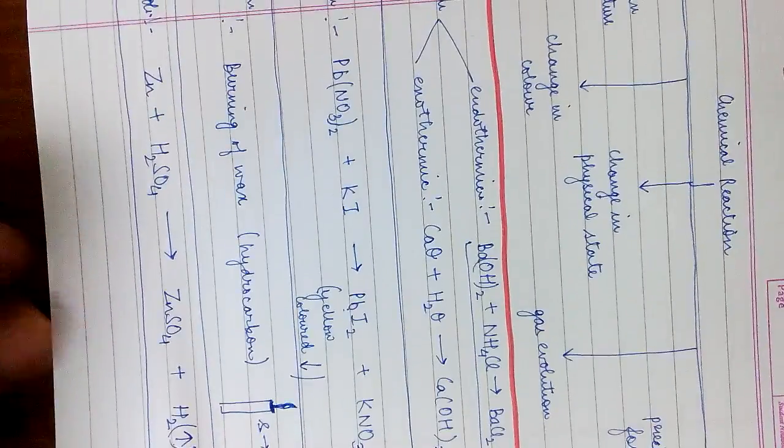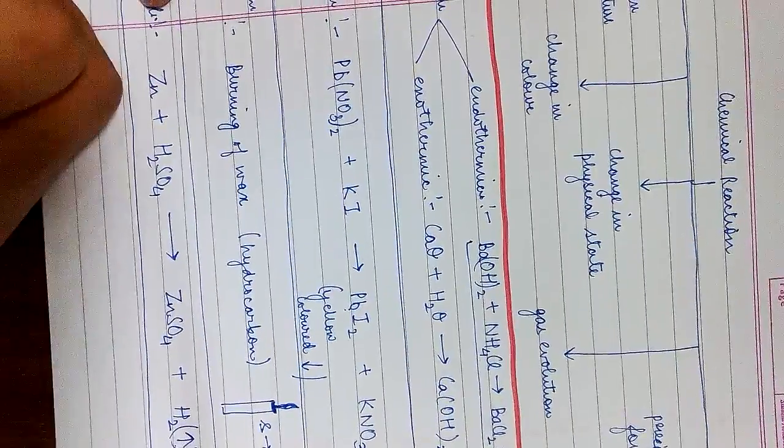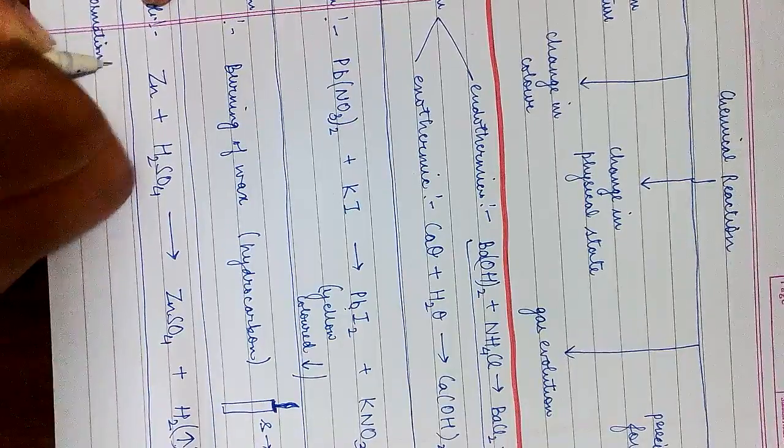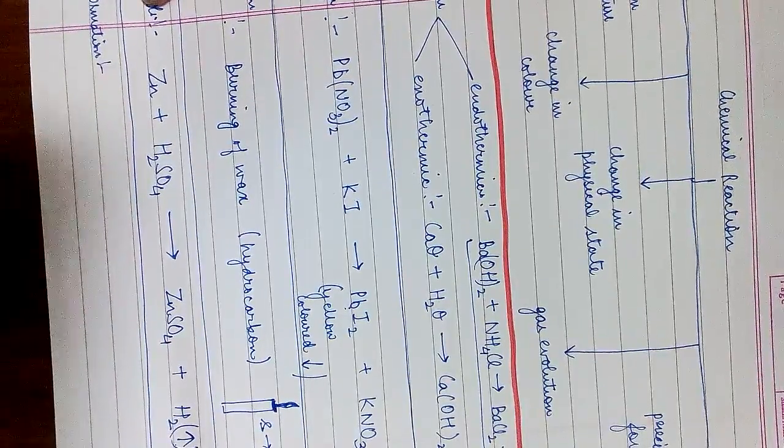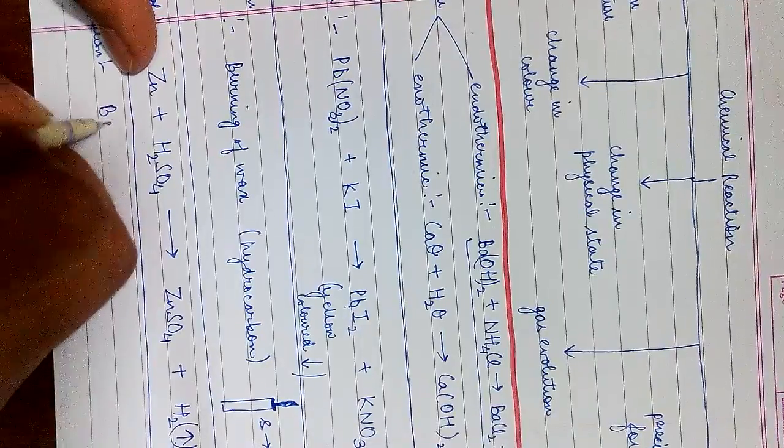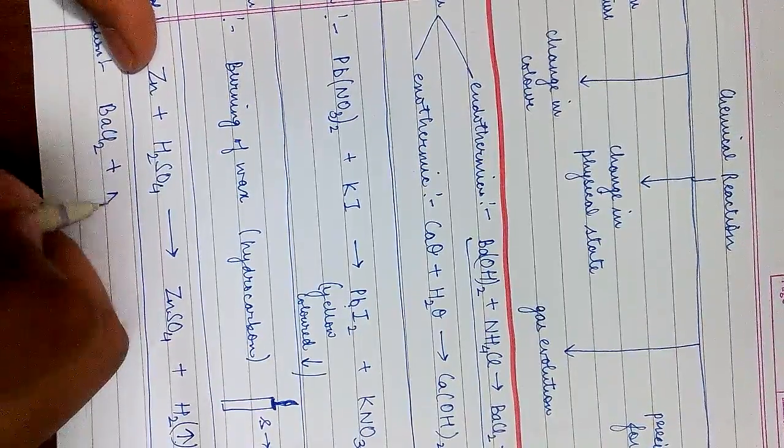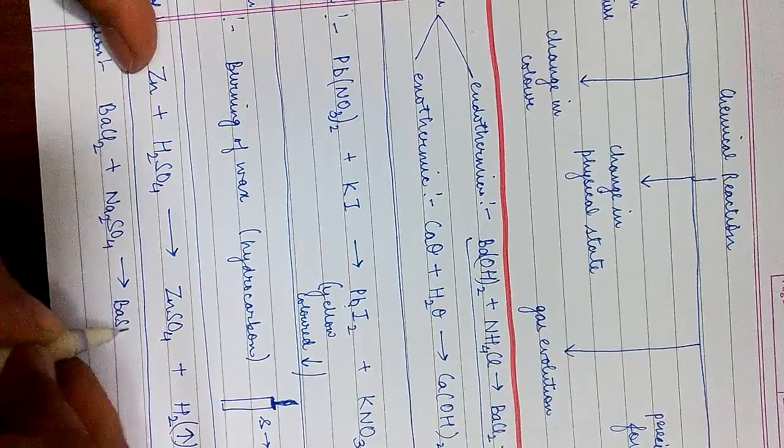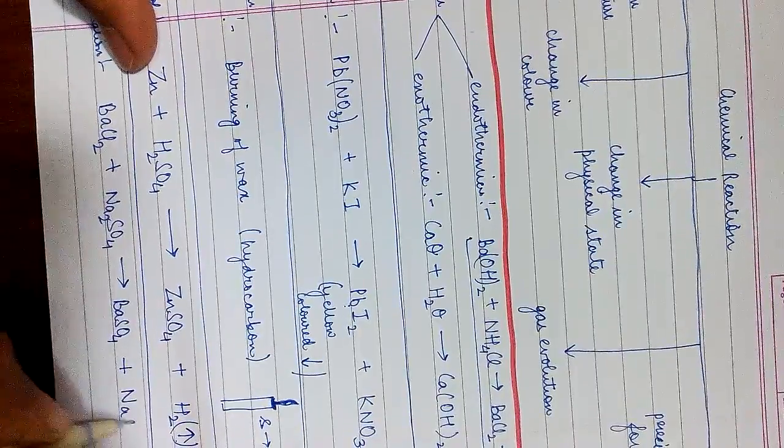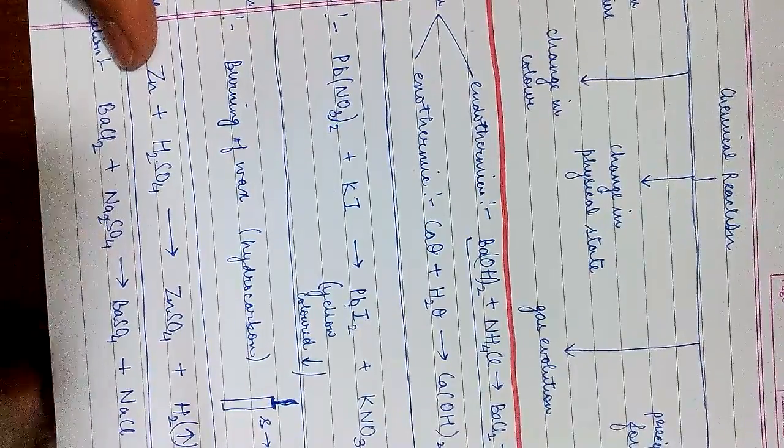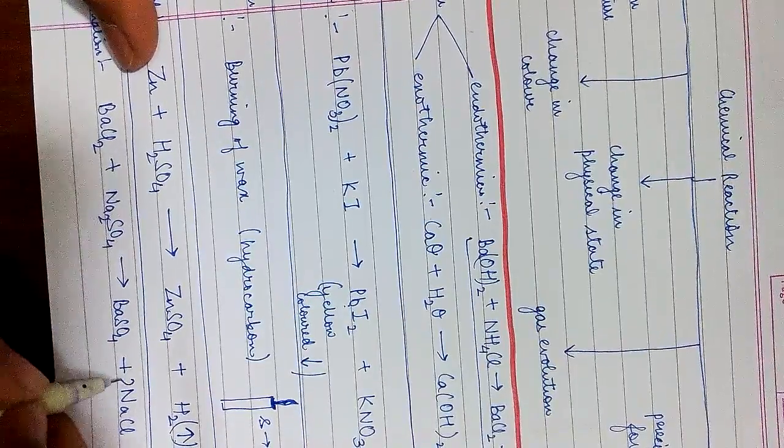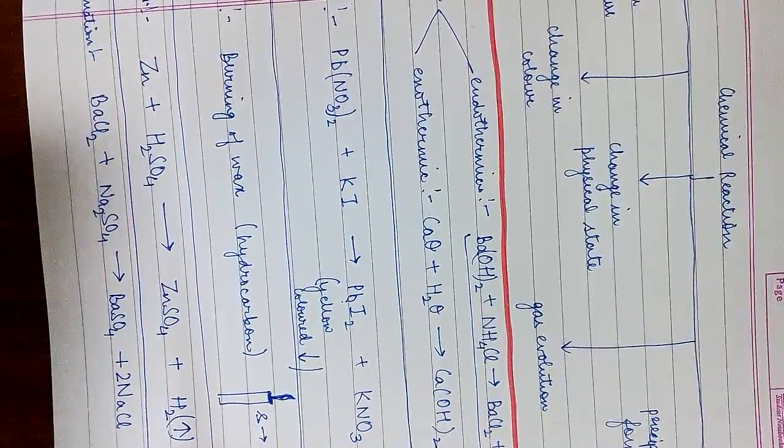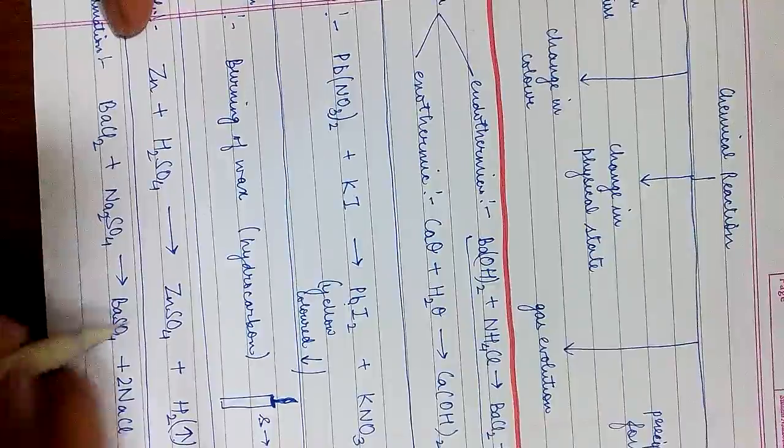Now precipitate formation, the easiest one. For this we have the best example and the most common one, that is the reaction of barium chloride with sodium sulfate to form the precipitate of barium sulfate and sodium chloride. This reaction is a skeletal equation and if we put 2 here with sodium chloride it would become a balanced chemical equation. So this is the precipitate formation reaction where barium sulfate is the precipitate.